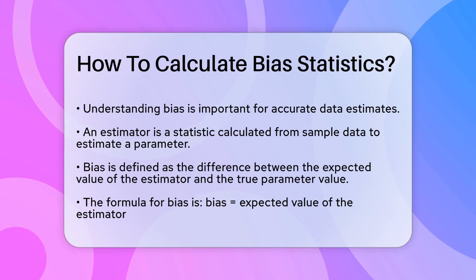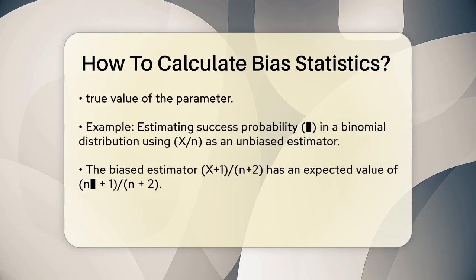To calculate the bias, you need to find the expected value of your estimator and then compare it to the true value. Here's the formula: Bias of the estimator equals expected value of the estimator minus the true value of the parameter.